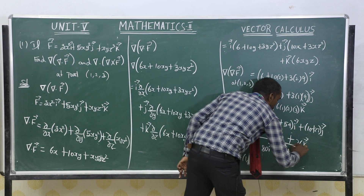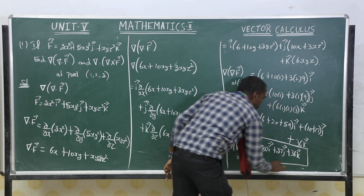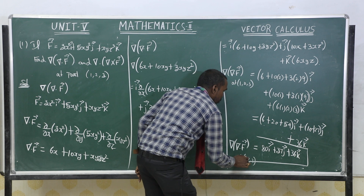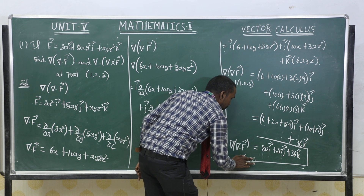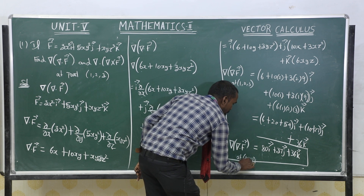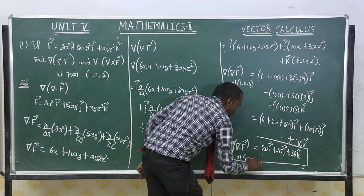This is the final value for delta of del dot F vector at the point 1, 2, 3. This is the final answer for the first subdivision.